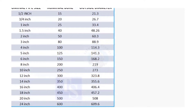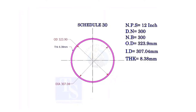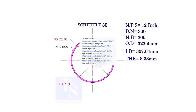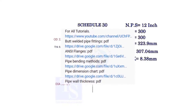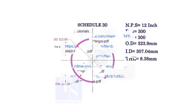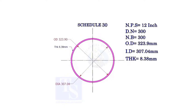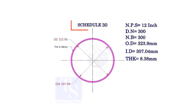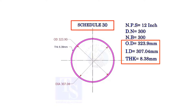Please check the links given in the description for PDF documents. Let us study the terms of a 12 inch pipe. The DN and NB sizes are the same. This is a 30 schedule pipe. Read the OD, ID, and thickness.